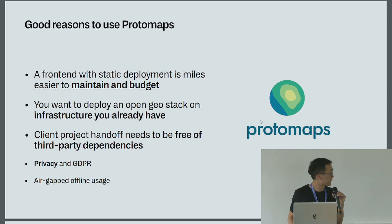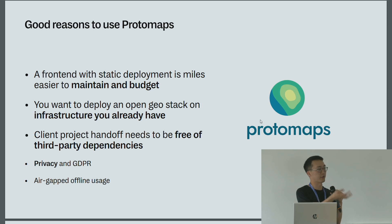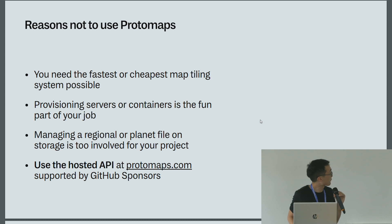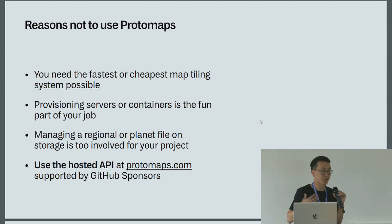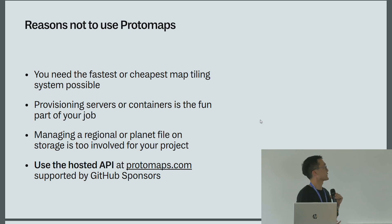Other reasons people might want to use Protomaps are privacy and GDPR compliance, or even for air-gapped usage. If you are a business that provides an on-premise appliance, this eliminates the need to call a vendor through the web. Some reasons not to use Protomaps: if you want the fastest, cheapest, or easiest system possible; if provisioning servers, containers, or managing Kubernetes is the fun part of your job; or if managing a file on storage is still dedicating too many resources for a scale-up project. For OpenStreetMap-based basemaps, I also have a free hosted API supported by GitHub Sponsors, which is a good alternative to Google Maps for small-scale projects.